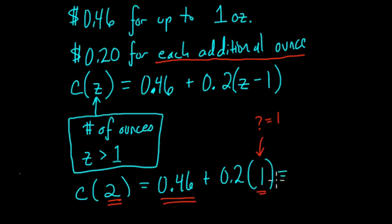Think about it. This would be 0.46 dollars plus 0.20 dollars, and that would be 66 cents which makes sense because you add 20 cents onto the 46 for the 1 ounce beyond the first ounce.